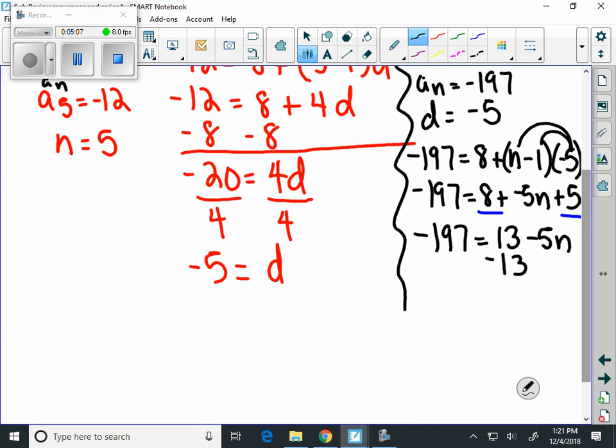If we subtract 13 from both sides, then we get negative 210 equals negative 5n.